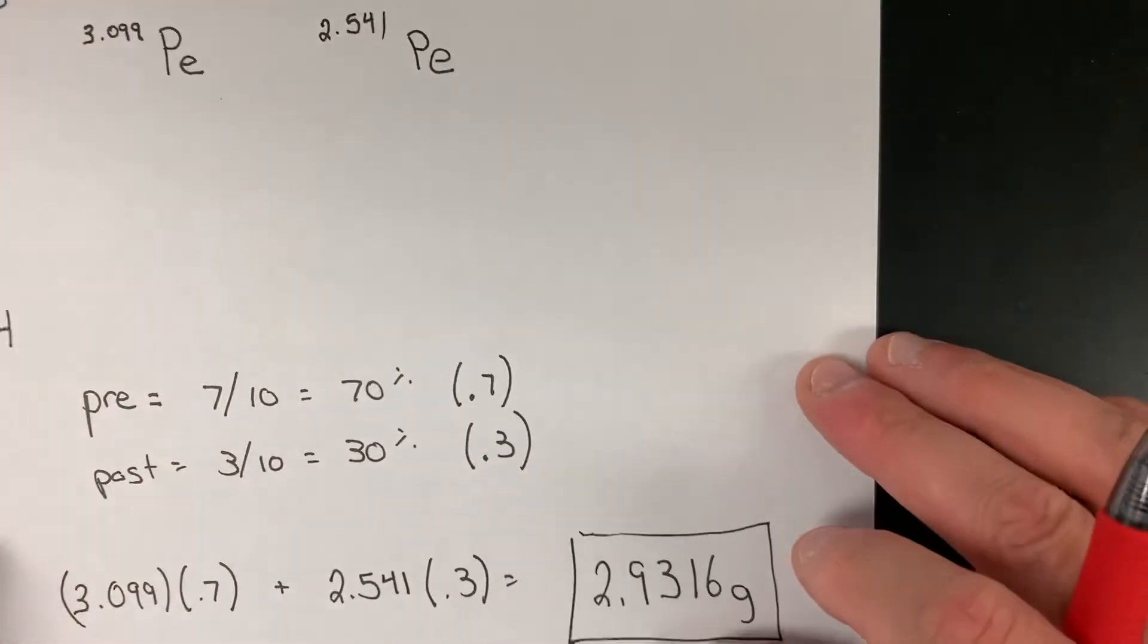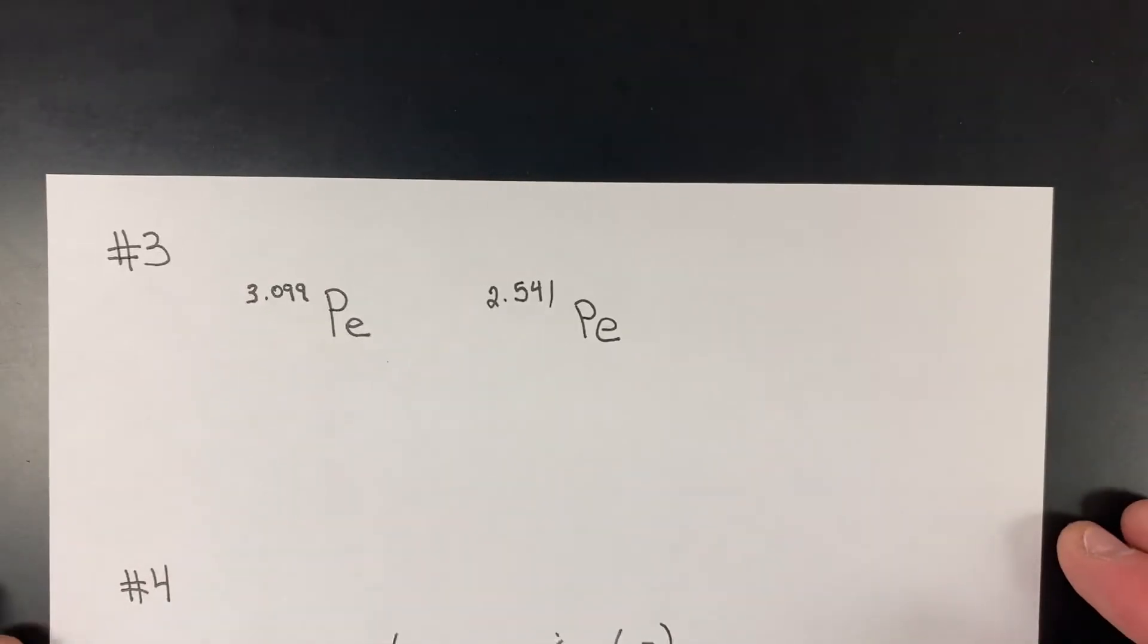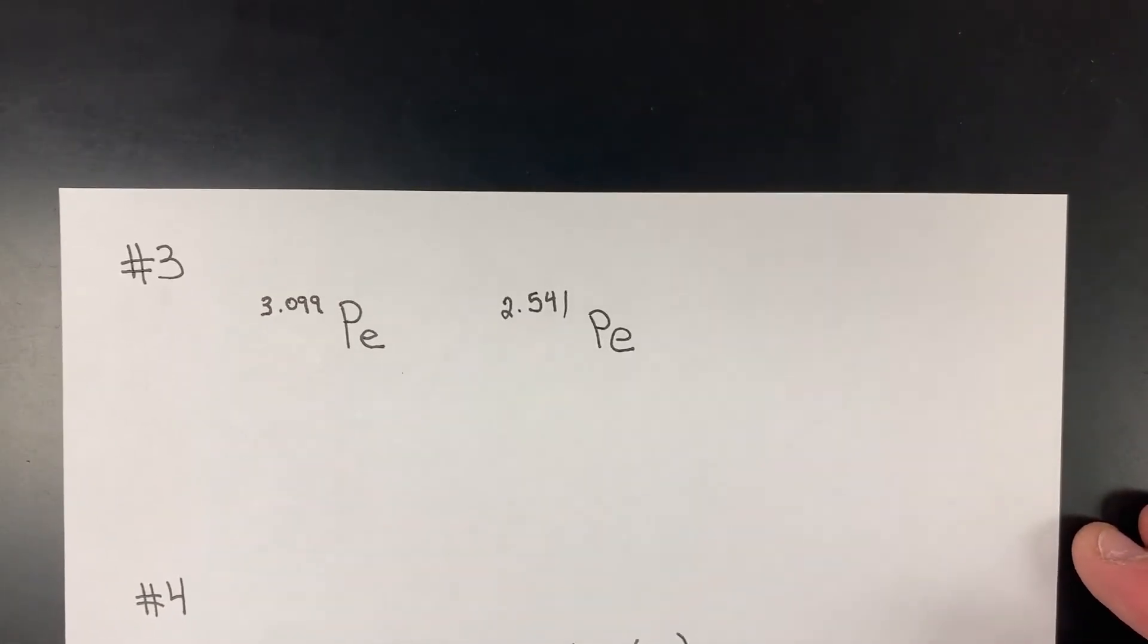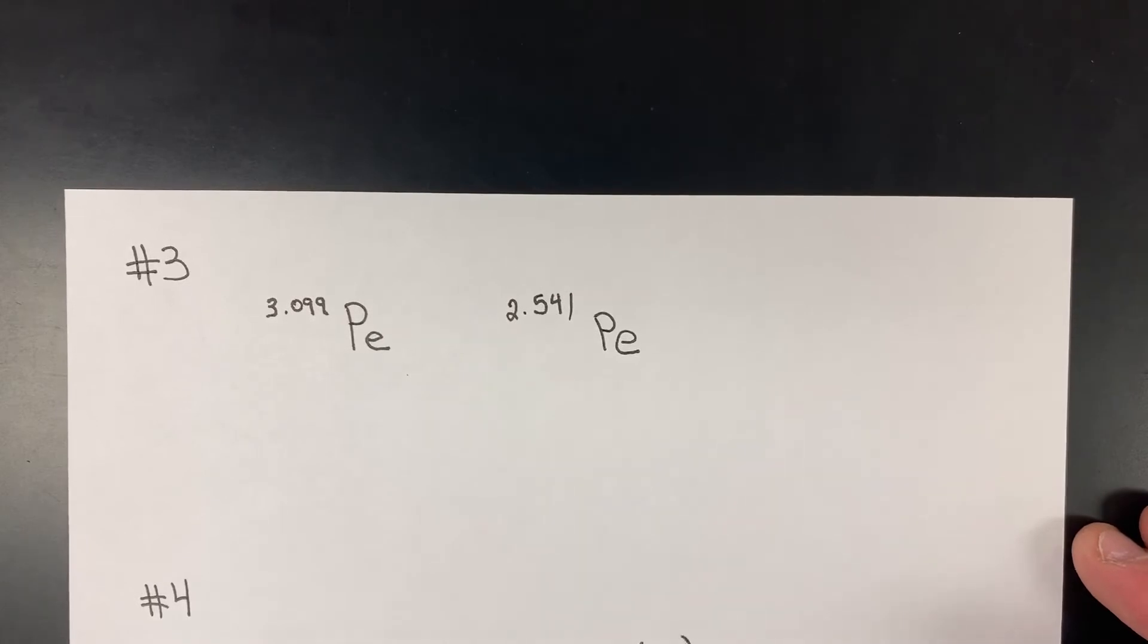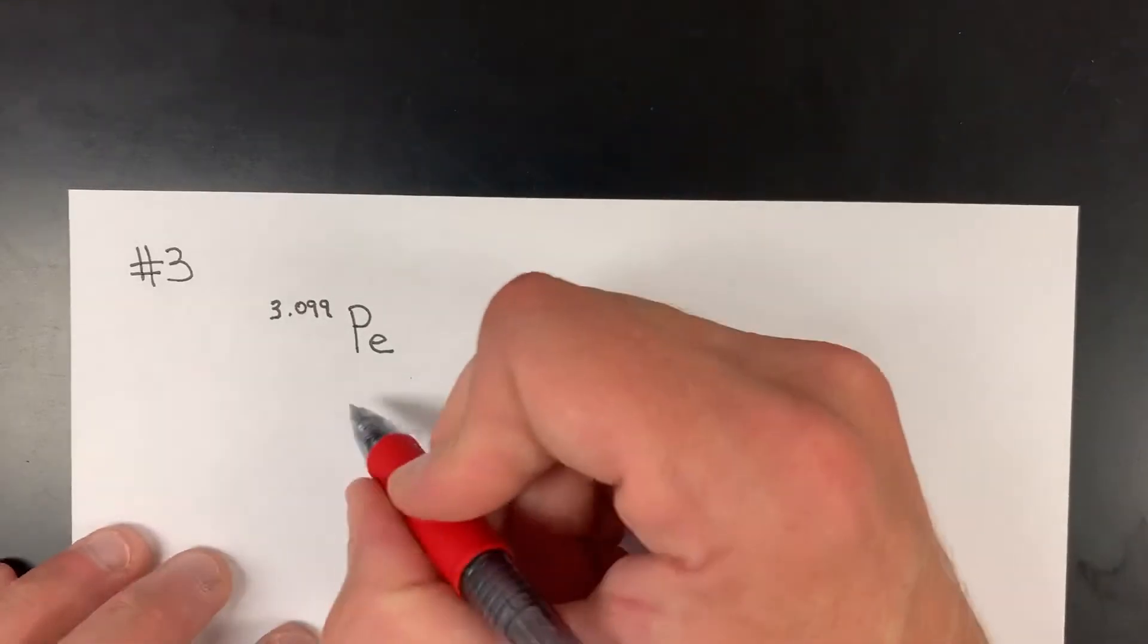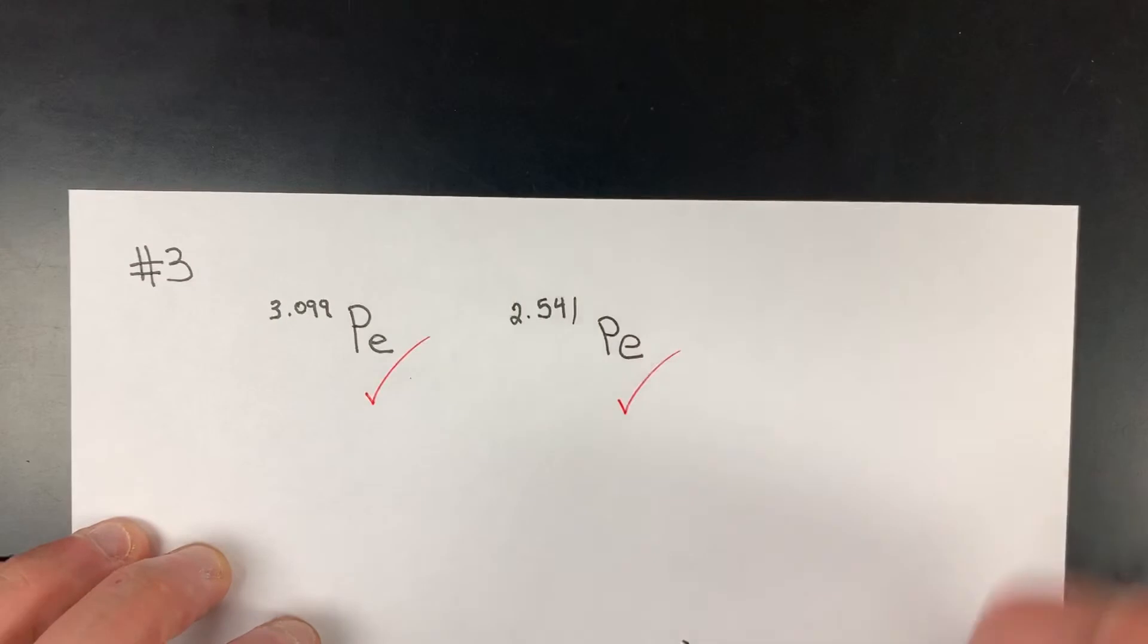Question number three is really straightforward, though the language is a little tricky. It says: what value for both the pre and post-pennies used in class would be analogous to the mass number within an atom? Well, here are our two pennies.